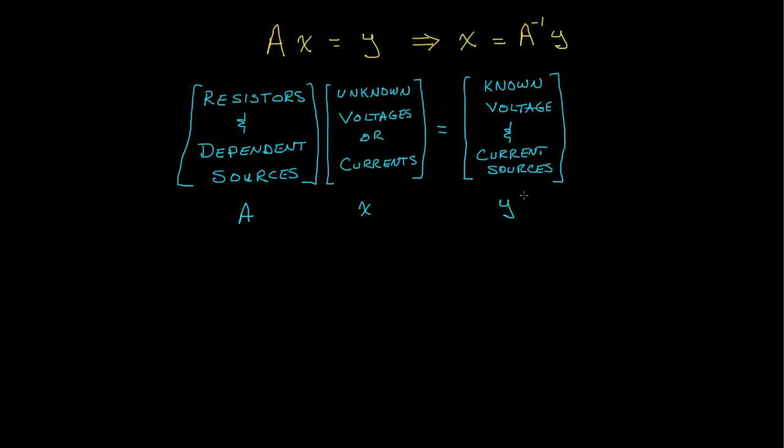One property of linear equations like this is that if the known part of the equation is decomposed into two or more parts, then the solution to the equation can be obtained as the sum of the solutions due to each of the decomposed components. This general principle might sound complicated, but it can be easily understood by looking at a simple example.